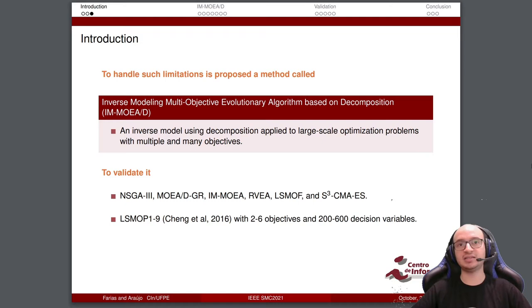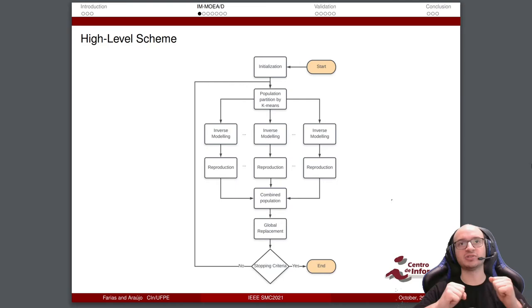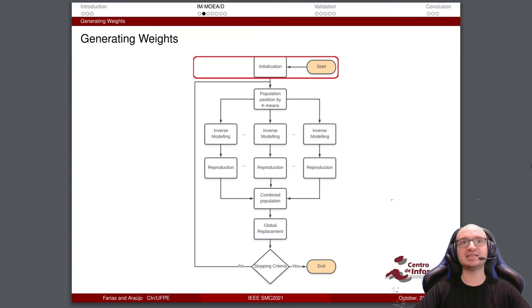The problem class is the LSMOPs 1 to 9 with 2 to 6 objectives and 200 to 600 decision variables. So let's present our proposed method. This is a high-level scheme of our proposed method and we consider each step of our algorithm. The first step is the initialization. In the initialization, we generate the population and the weight vectors and some parameters.